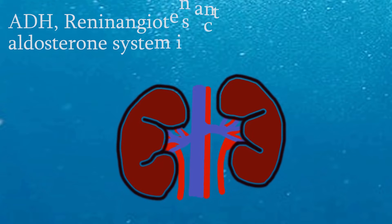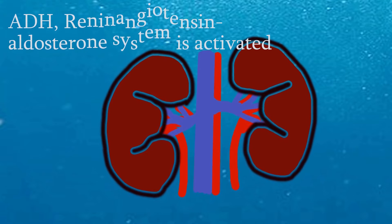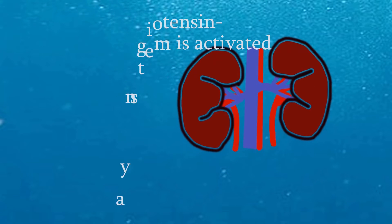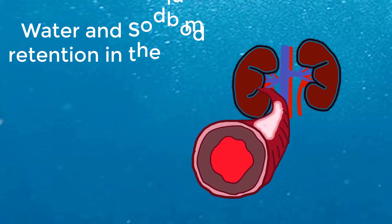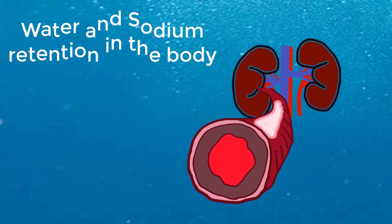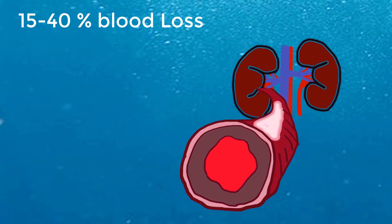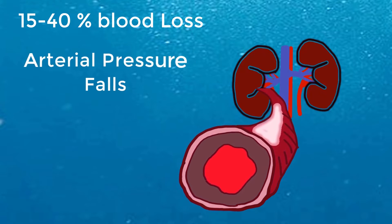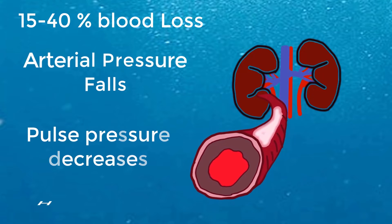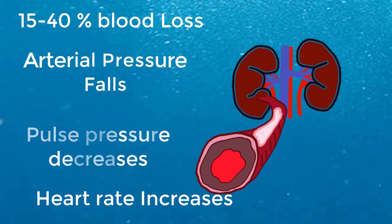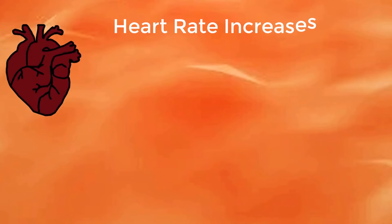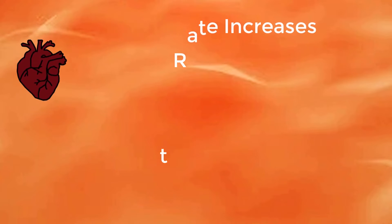Antidiuretic hormone is released, and the renin-angiotensin-aldosterone system is activated to increase free water and sodium retention in an effort to sustain intravascular volume. When blood loss is 15–40%, mean arterial pressure falls, pulse pressure decreases, and heart rate increases, the magnitude of these changes being related to how much blood is lost. Heart rate increases to sustain blood pressure and tissue perfusion.